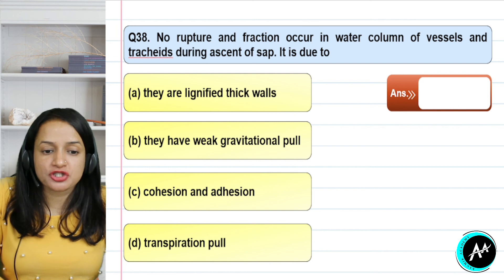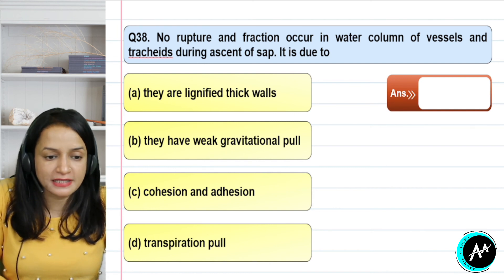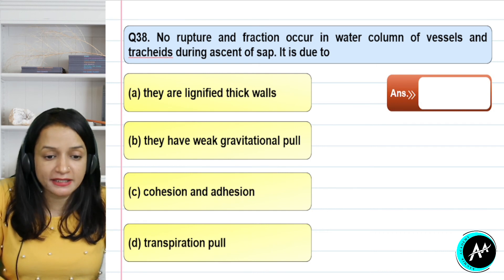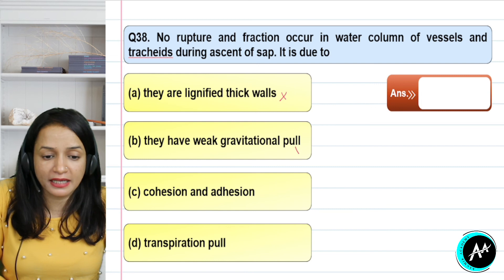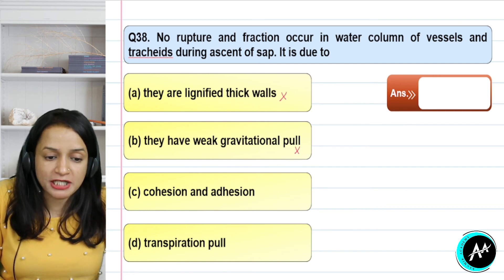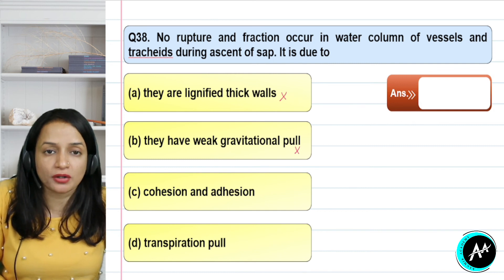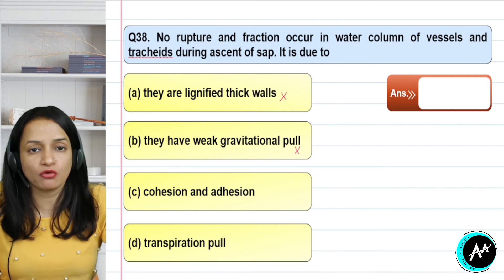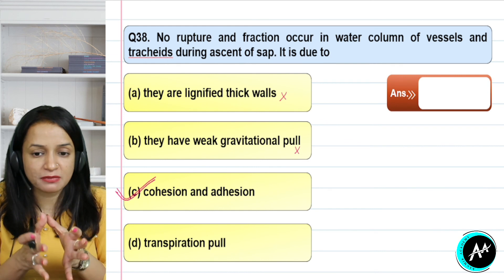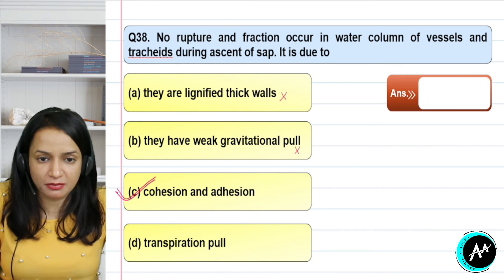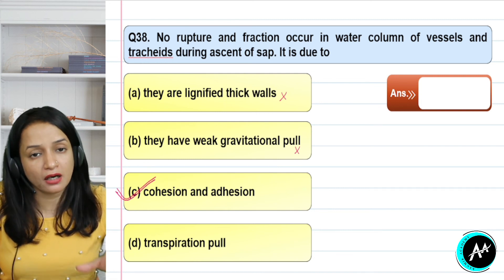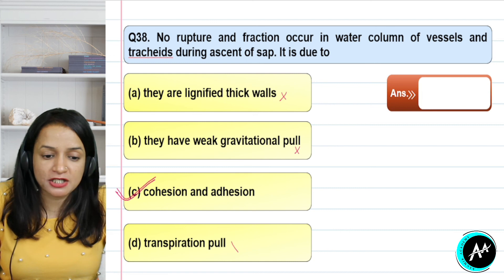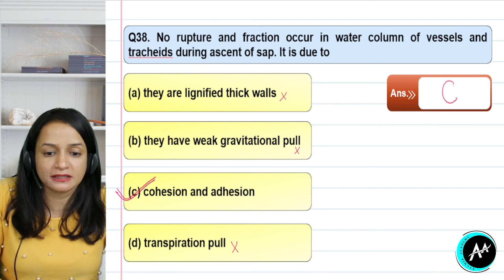Question 38: no rupture and friction occur in a water column of vessels and tracheids during ascent of sap — this is due to what? Option A says they have lignified thick walls; if lignified, transportation would be hindered. Option B says they have weak gravitational pull — if so, movement would not occur. Option C is cohesion and adhesion — cohesion means water molecules attach to each other; adhesion means they attach to the xylem wall, forming a continuous unbroken column for transport. Transpiration pull is not the answer here. The correct answer for question 38 is option C — cohesion and adhesion.